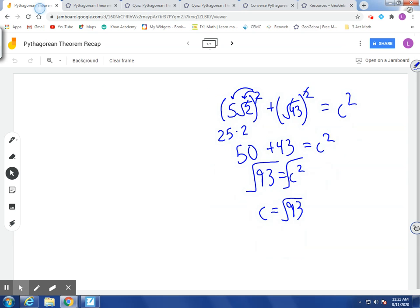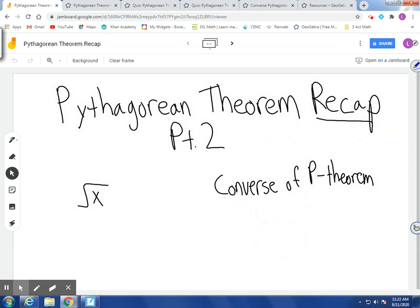All right, the other thing I want to go back and talk about is the converse of the Pythagorean theorem. Now, the original Pythagorean theorem is that we have a right triangle, we get a squared plus b squared equals c squared. The converse is we just flip it around. We're going to go from right to left.